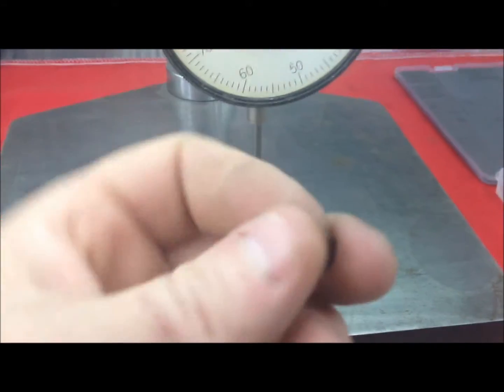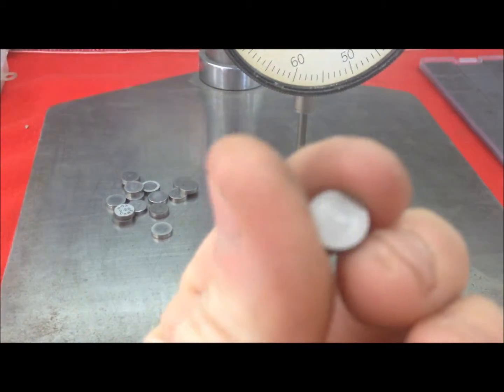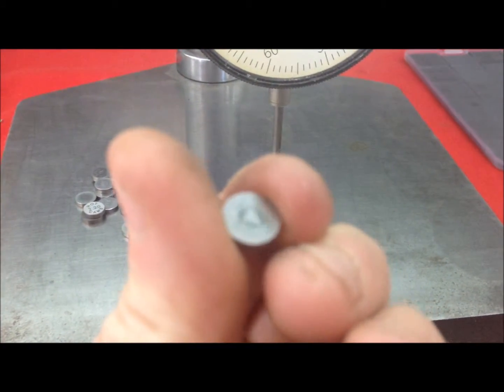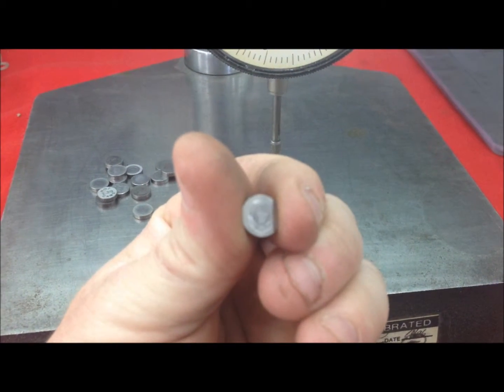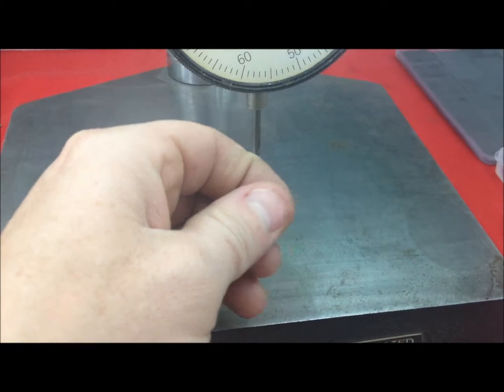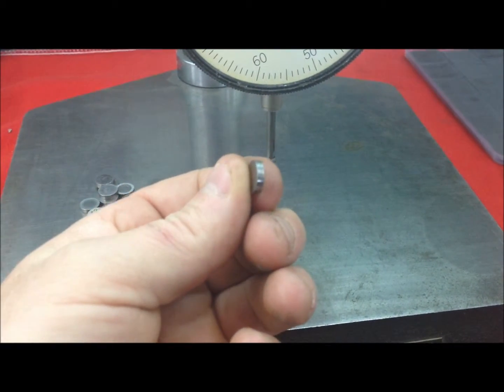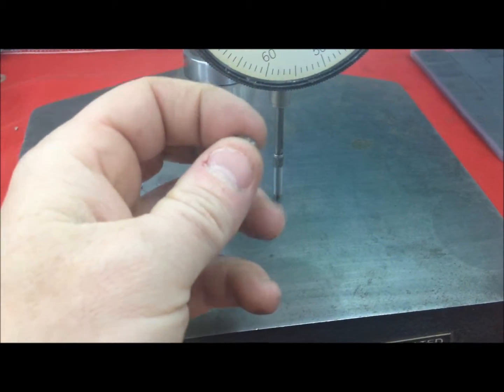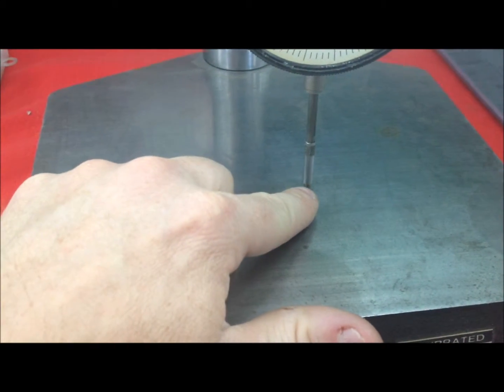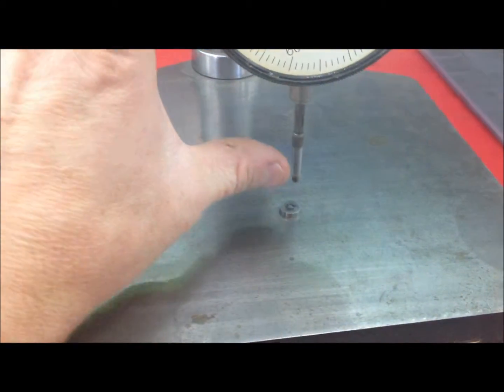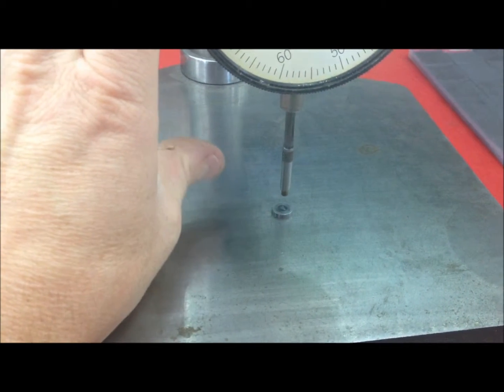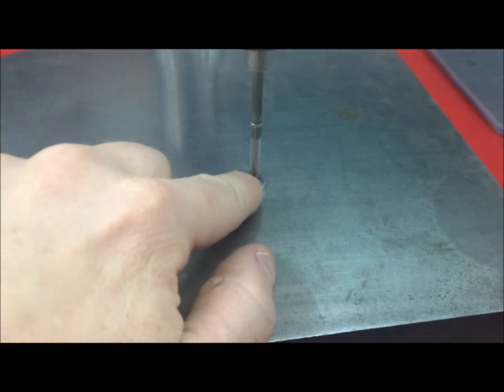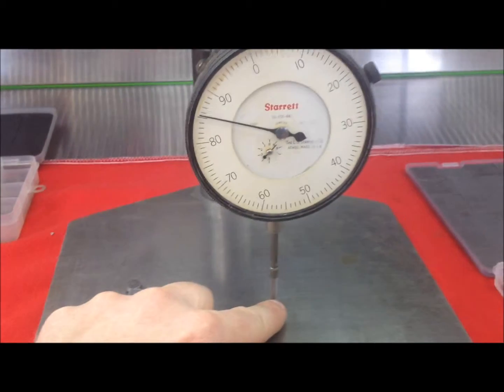Another plus to doing this method is if you get a shim that is worn like this one, they wear in the middle. So if you're using an old shim with a dial caliper it's just going to touch on the outside edges, so it's not going to get the thinnest part. When we do this way, then we definitely get the thinnest part, and we can read that more accurately.